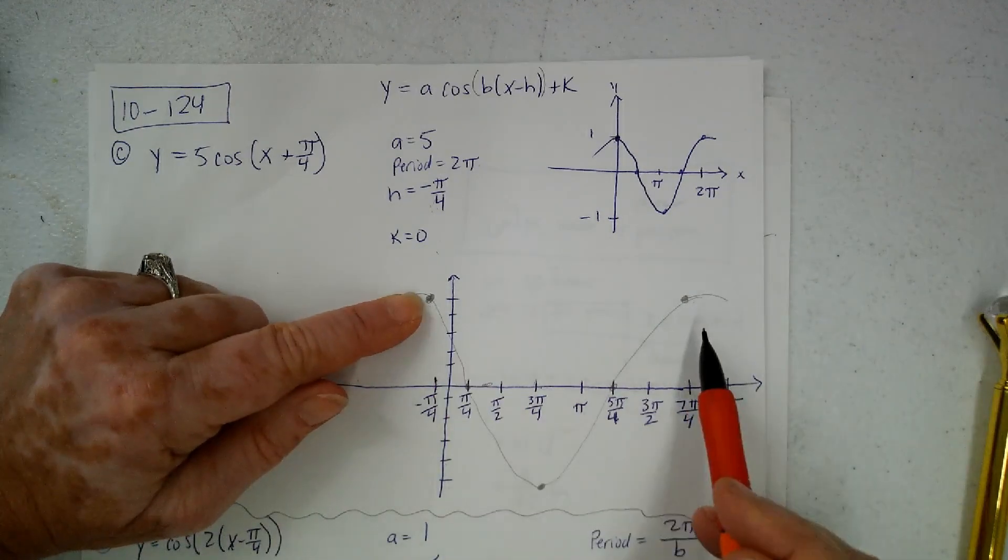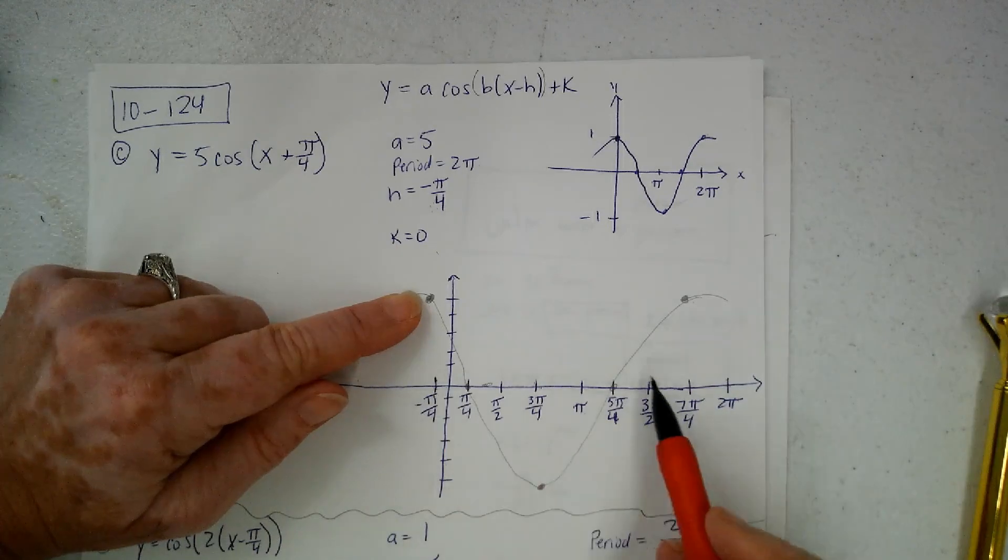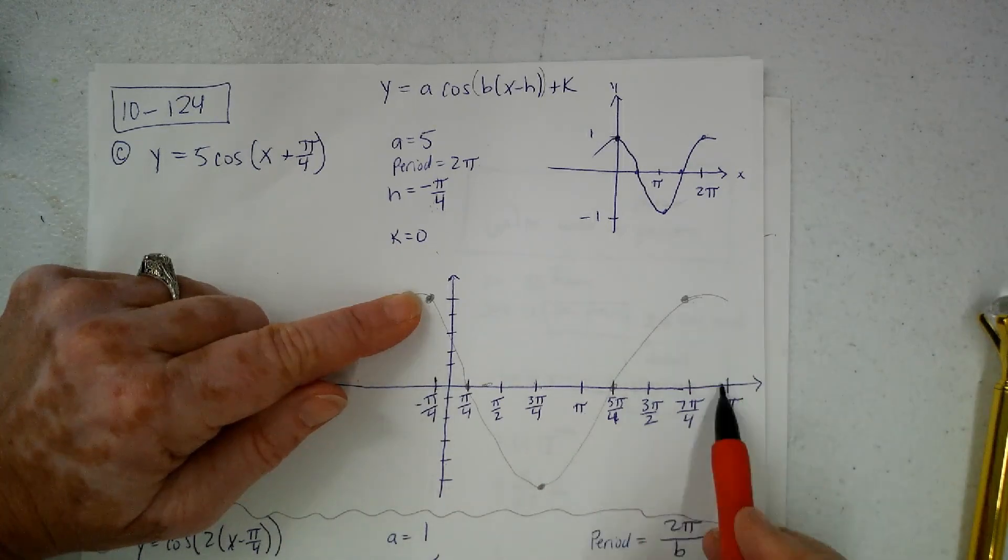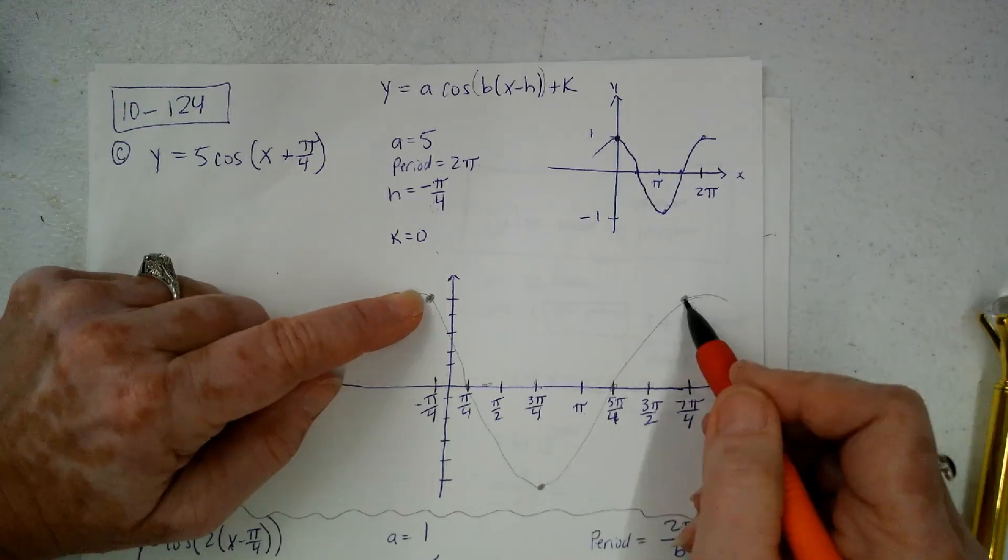And then I'm going to end my graph exactly 2π away from the first dot that I made. So really, see how this is shifted over from 0 by 1? All I have to do is look at the 2π and shift left also by 1.